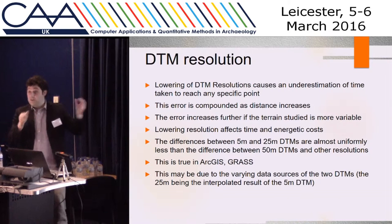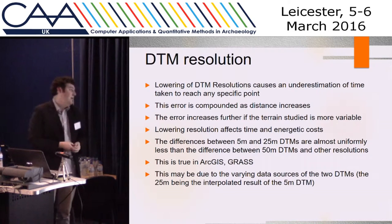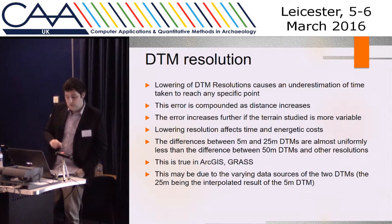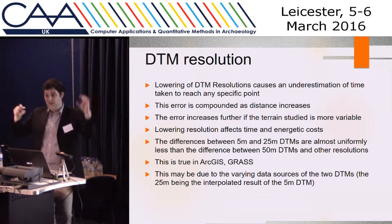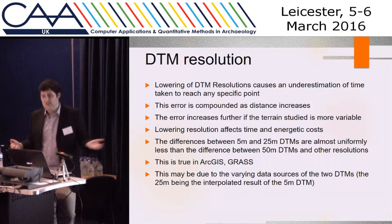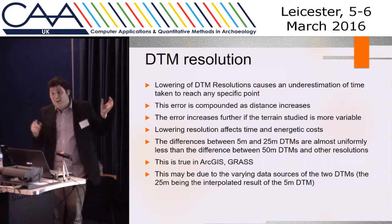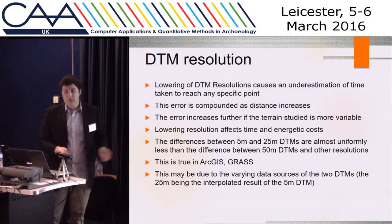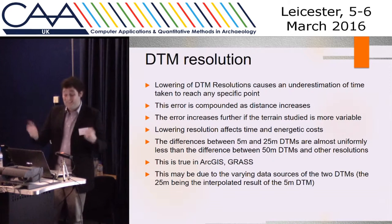The other thing I found is that variation increases as you get further from the point — you compound the error — and this is true in both ArcGIS and GRASS. Somewhat reassuringly, the difference in error between a 5-meter and 50-meter DTM compared to a 5-meter and 25-meter DTM wasn't five times worse. Although you get an underestimation of time, it's not proportionally five times worse if you use a five-times-coarser DTM. I've settled on using 25 meters as a compromise between accuracy, storage, and processing time.